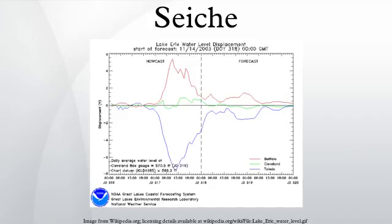Seiche waves may continue for several days after a tsunami. Tide-generated internal solitary waves can excite coastal seiches at locations including Magueyes Island in Puerto Rico, Puerto Princesa in Palawan Island, Trincomalee Bay in Sri Lanka, and in the Bay of Fundy in eastern Canada, where seiches cause some of the highest recorded tidal fluctuations in the world. A dynamical mechanism exists for the generation of coastal seiches by deep sea internal waves. These waves can generate a sufficient current at the shelf break to excite coastal seiches.